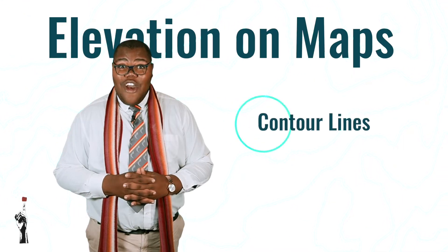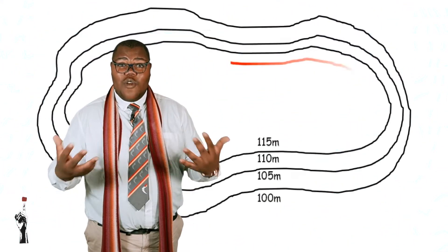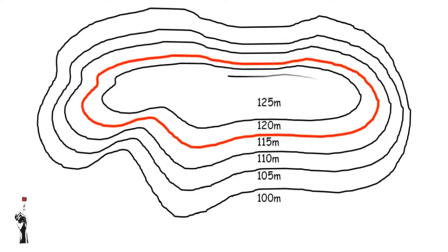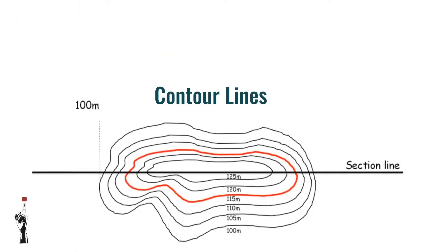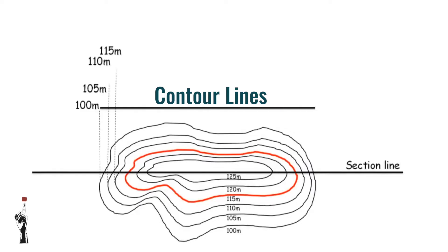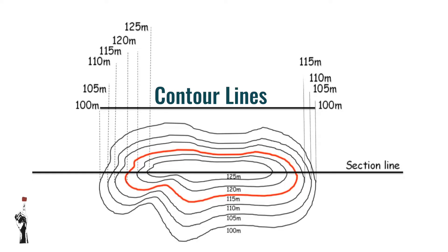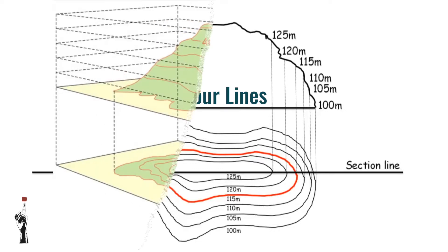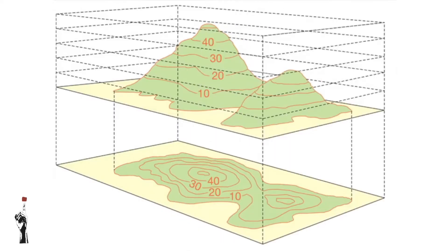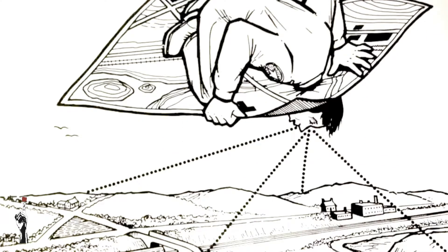Moving over to contour lines, which are the imaginary lines that join places of equal height. Contour lines are curved lines that connect points of equal elevation on a map. They help us visualize the shape and steepness of the terrain. The closer the contour lines, the steeper the terrain. The further apart the contour lines, the flatter or more gentle the terrain. This allows us to perceive elevation and shape even on a flat piece of paper.